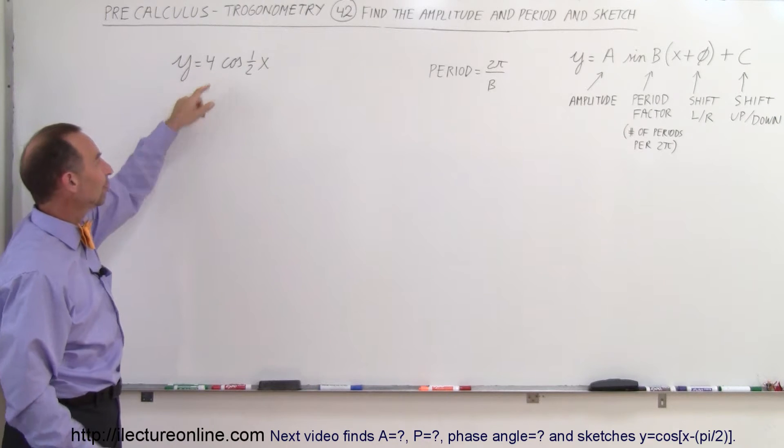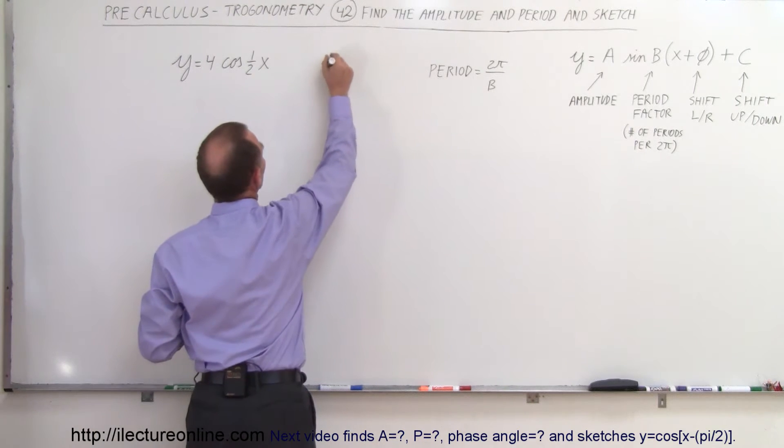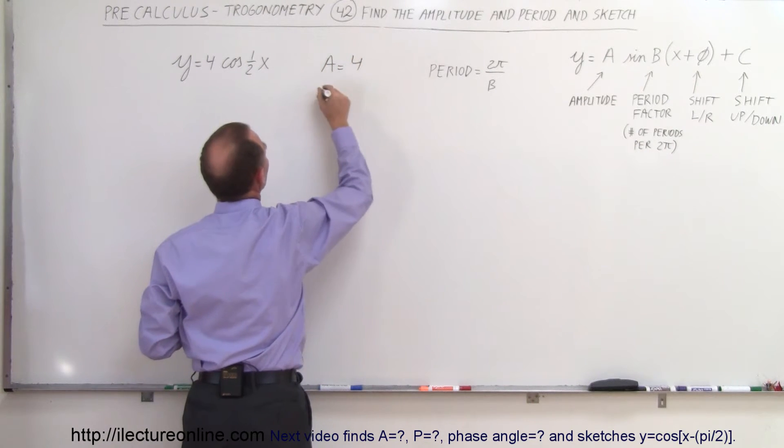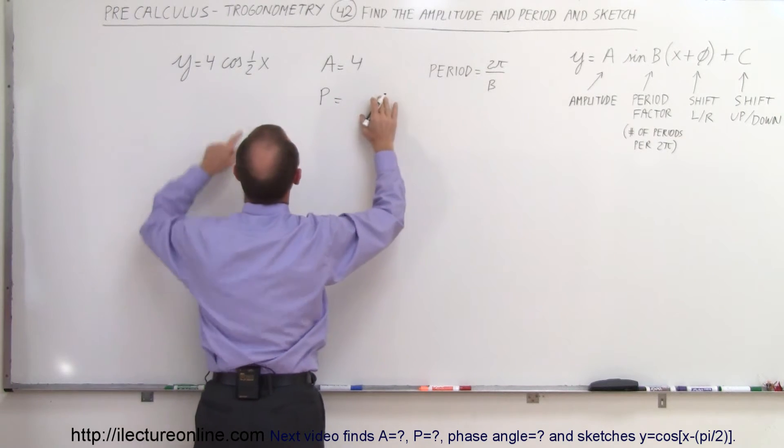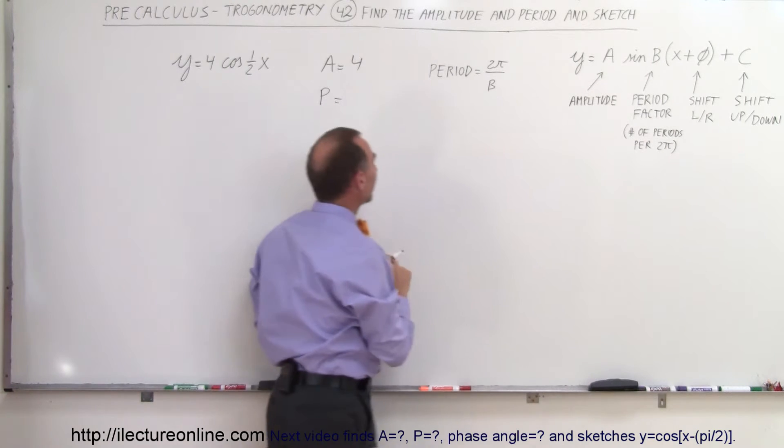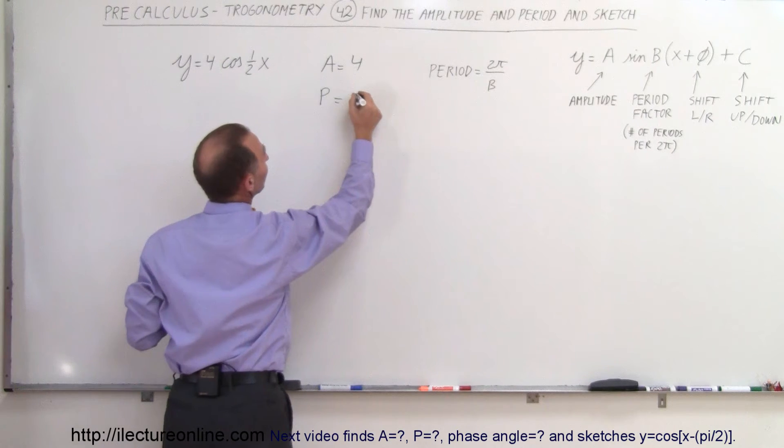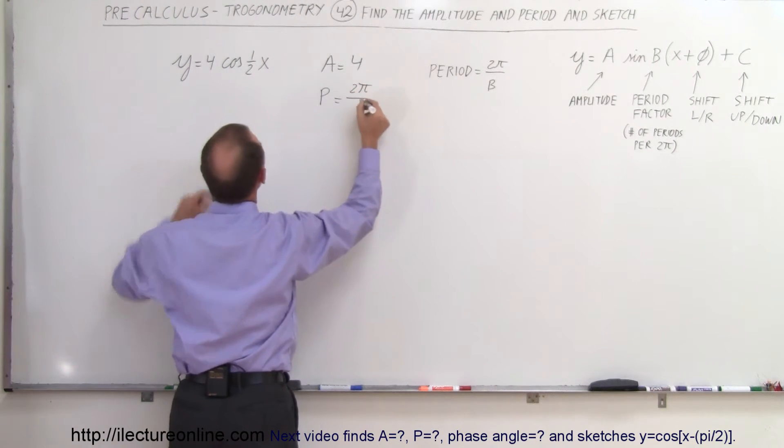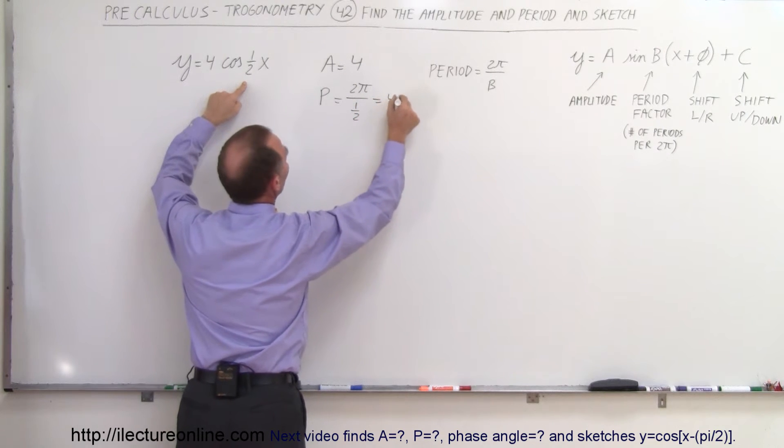So we know the amplitude is 4, that is very straightforward, and the period is found by taking 2 pi divided by b. Remember b is the number in front of the x right there and so we can say that this is equal to 2 pi divided by 1 half which is equal to 4 pi.